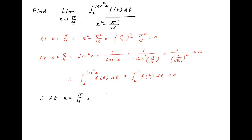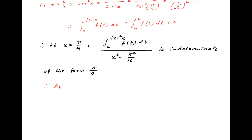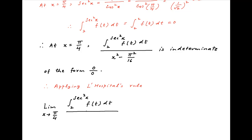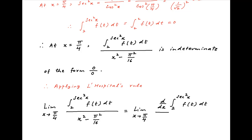Therefore, at x equal to π/4, the expression — integral of f(t) dt from t = 2 to sec²x, divided by x² − π²/16 — is indeterminate of the form 0/0. Therefore, we are in a position to apply L'Hôpital's rule. The value of the given limit equals the limit as x tends to π/4 of the derivative of the numerator divided by the derivative of the denominator.